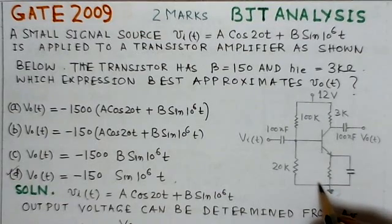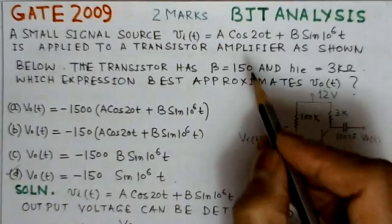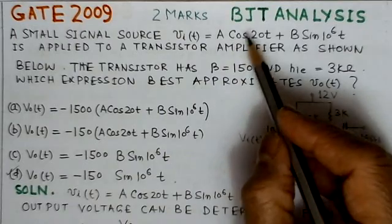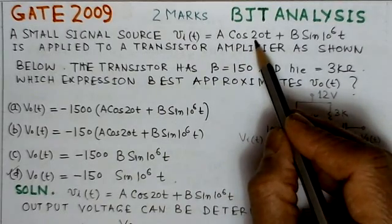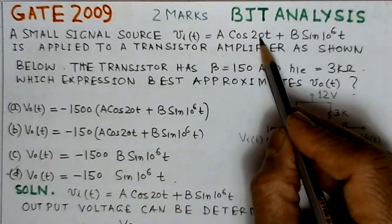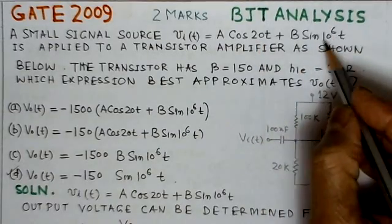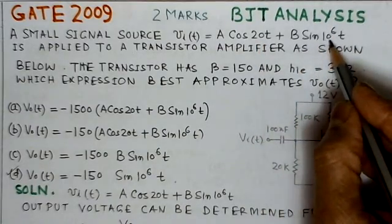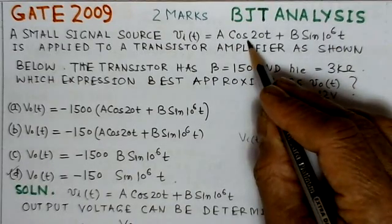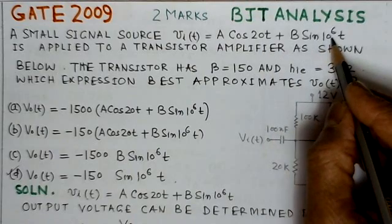Here we observe the following points. Number one, if we see the input signal, this input signal consists of two frequency components. The first is at ω = 2 and the second component is at ω = 10^6. That means two frequency components: one is low frequency, the other is very high frequency.